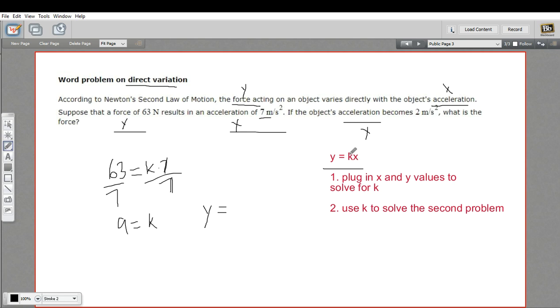We do know k now. Our constant of variation is nine. And they're telling us the acceleration, which is our x here, is two meters per second squared.